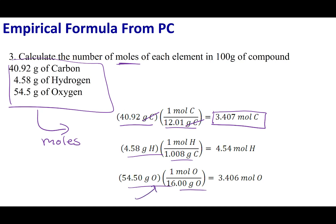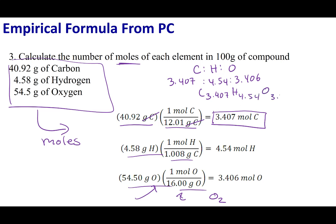Be careful: for oxygen, you need the atomic weight of oxygen — don't confuse this with O₂. I'm talking about oxygen atoms. Once we do all of this, we can ratio the results. The carbon to hydrogen to oxygen ratio is 3.407 to 4.54 to 3.406 — or written as a formula: C₃.₄₀₇H₄.₅₄O₃.₄₀₆.